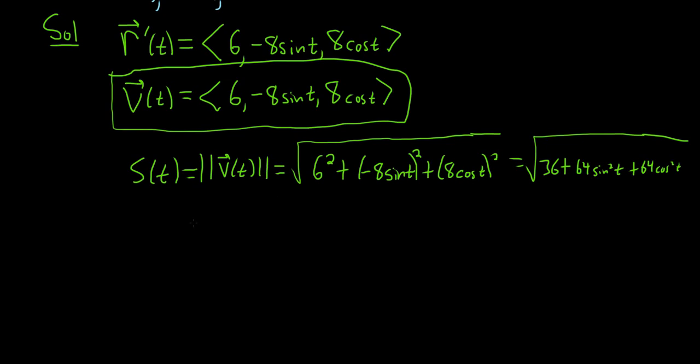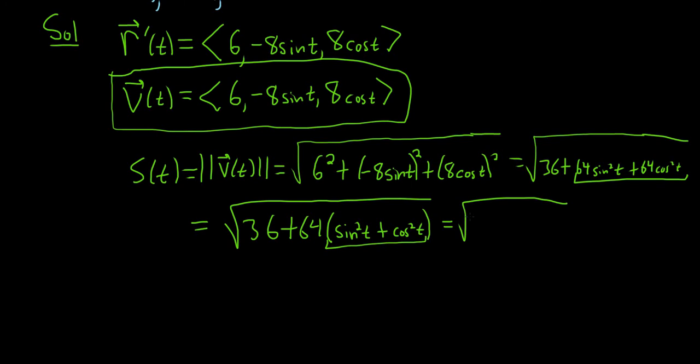All right, so this is equal to, let's see, square root of 36. It looks like we can pull out a 64 here from these. So we'll have 64, and then sine squared t plus cosine squared t. This is equal to the square root of, well, this is equal to 1, right? Sine squared plus cosine squared is 1, so we get 36 plus 64 times 1.